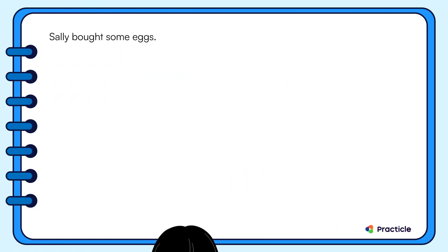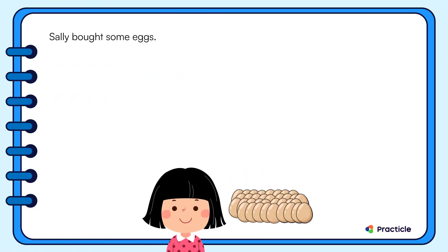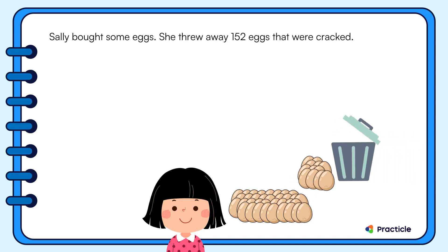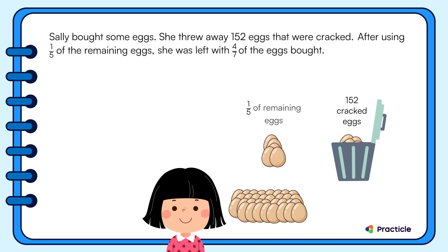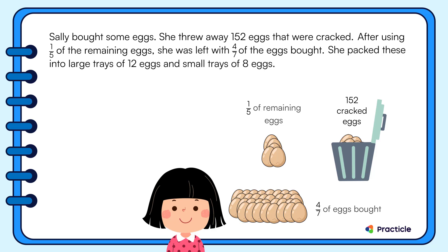Sally bought some eggs. She threw away 152 eggs that were cracked. After using one-fifth of the remaining eggs, she was left with four-sevenths of the eggs bought. She packed these into large trays of 12 eggs and small trays of 8 eggs.